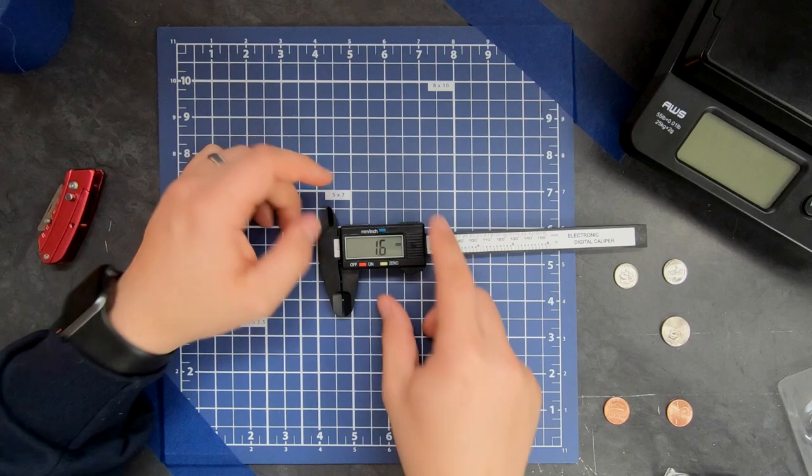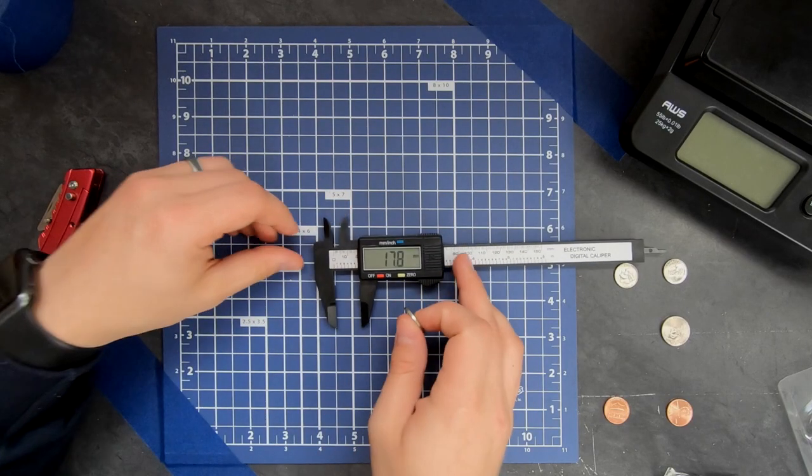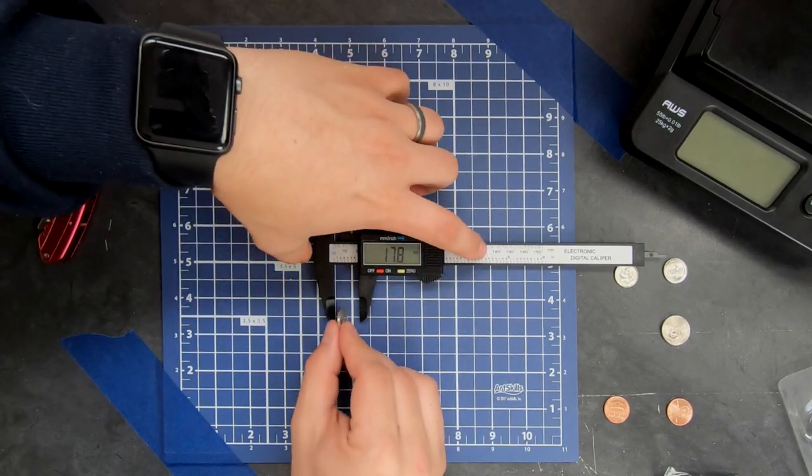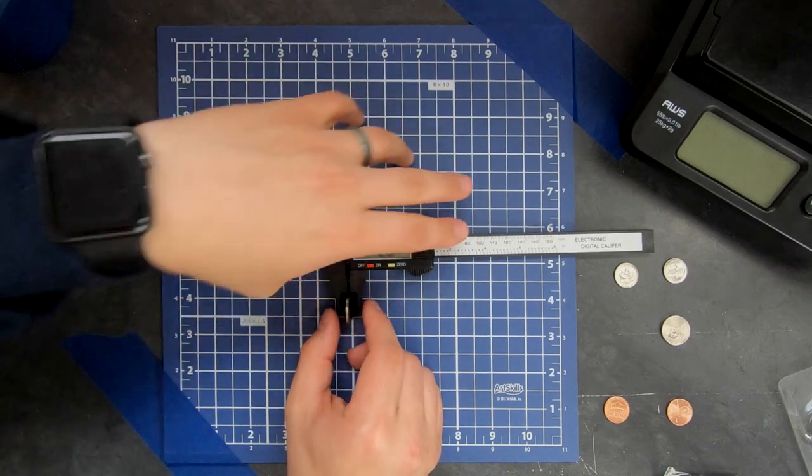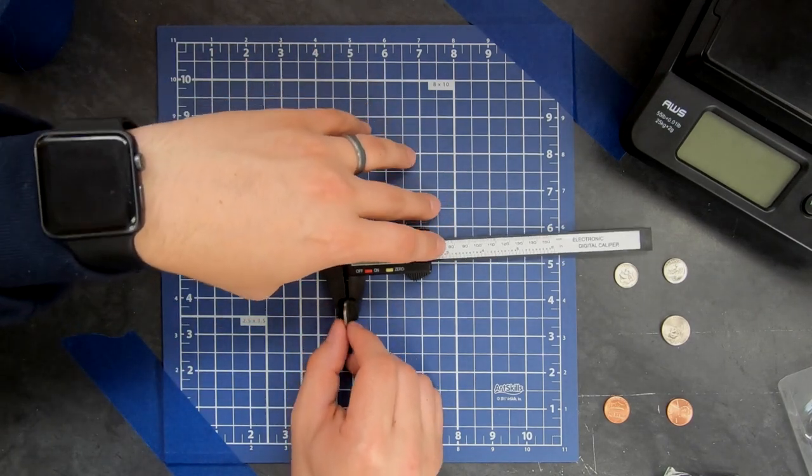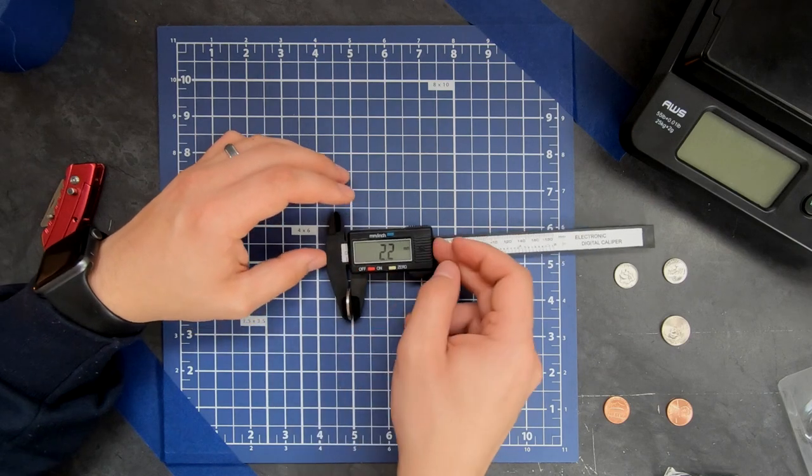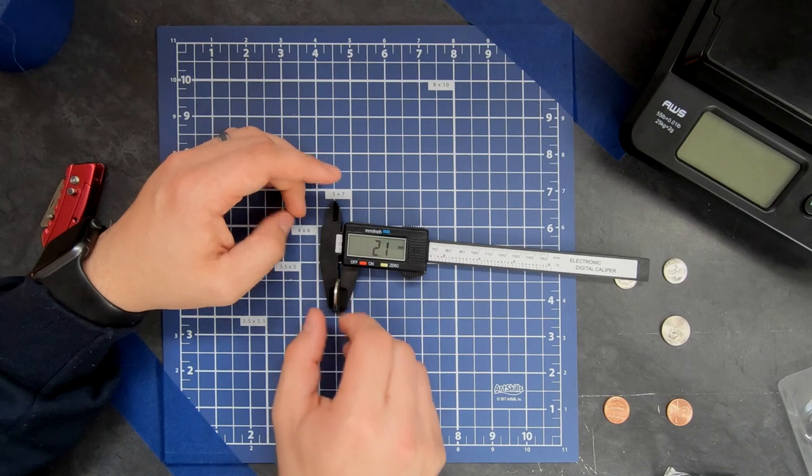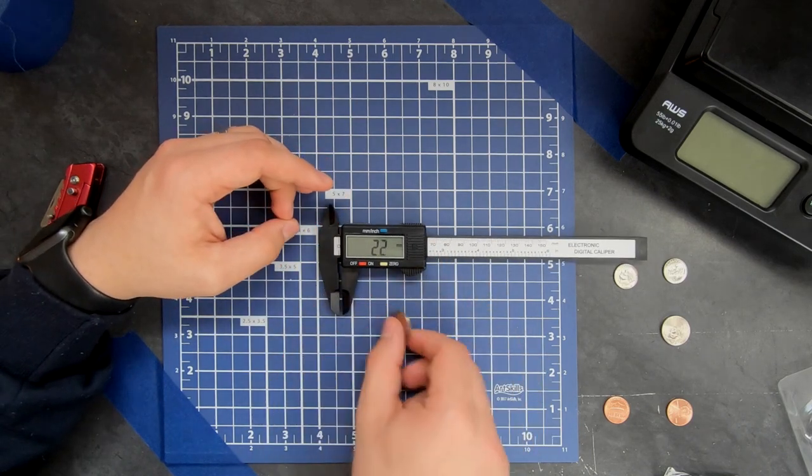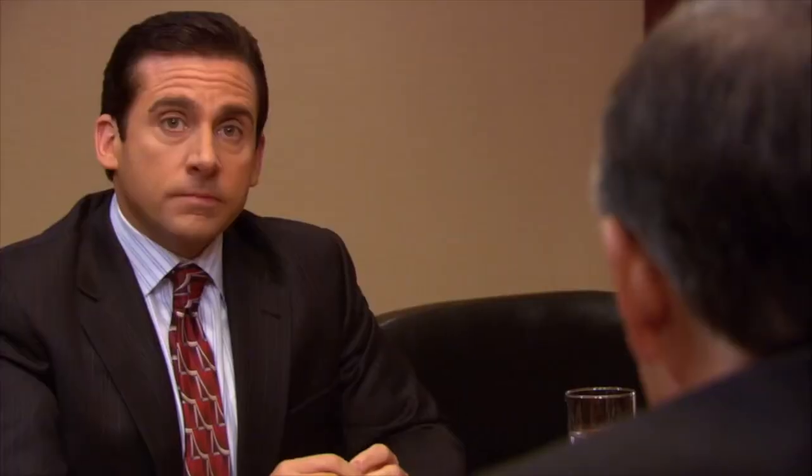The next thing we're going to test is the nickels. A nickel is 1.95 millimeters. So let's put this caliper back on the table and slowly clamp it. I mean, this is pretty tight, right? That's what she said. That's saying 2.2. This is not a special nickel. I can't even get it to force down to 1.95. Literally at 2.2, 2.5, 2.2, 2.1. Let's try this other nickel. Slide it right in there.